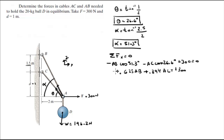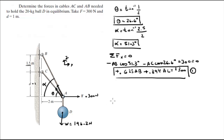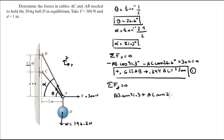We convert it all to positive to make it a little prettier — call that equation 1. Then we know that the sum of the forces in Y equals 0. AB is coming up times the sine of 51.3, plus AC times the sine of 26.6, minus 196.2, equals 0.